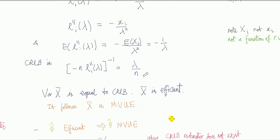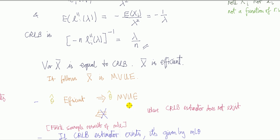In other words, out of all unbiased estimators, this x bar has the smallest variance—i.e., has the most precision. We can also say it follows therefore that x bar is the minimum variance unbiased estimator (MVUE). If you have an estimator theta hat that's efficient, that implies it's a minimum variance unbiased estimator, but the converse does not hold. If it's a minimum variance unbiased estimator, it does not imply that it is efficient. This is the case where the Cramér-Rao lower bound estimator does not exist.